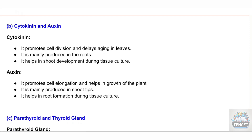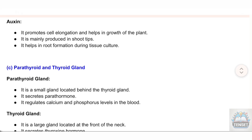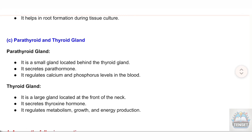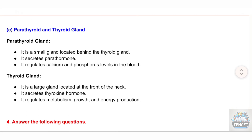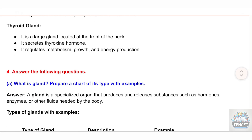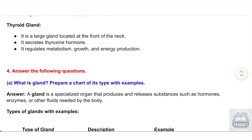C) Parathyroid and Thyroid gland. Parathyroid gland: It is a small gland located behind the thyroid gland. It secretes parathormone. It regulates calcium and phosphorus levels in the blood. Thyroid gland: It is a large gland located at the front of the neck. It secretes thyroxine hormone. It regulates metabolism, growth, and energy production.